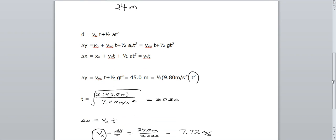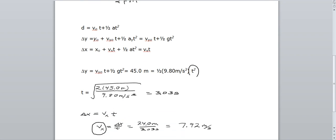And then we look at the x direction. In the x direction, we have velocity in the x direction times t. Solving for v in the x direction is delta x over t. You have 24 meters, and that was given in the problem. We solved for time, which is 3.03 seconds. And if you do the math, you get 7.92 meters per second.